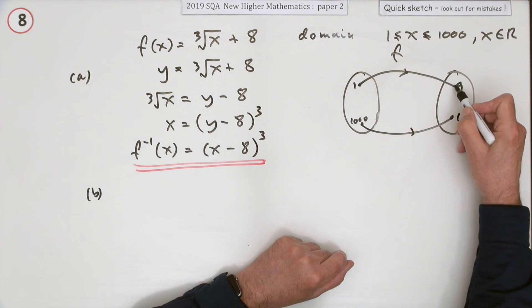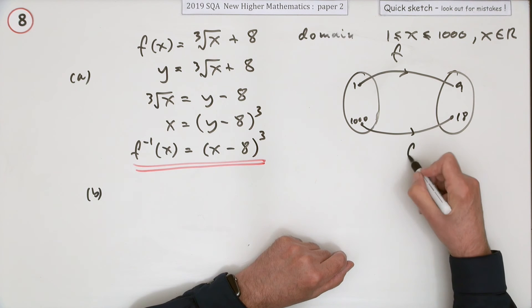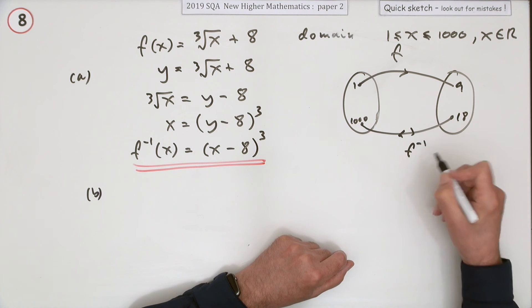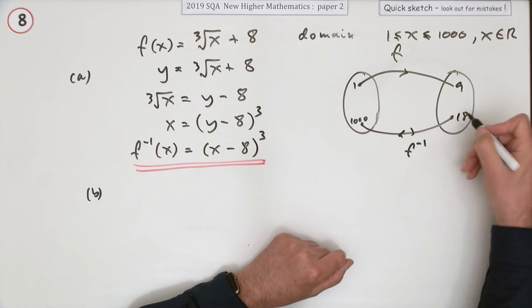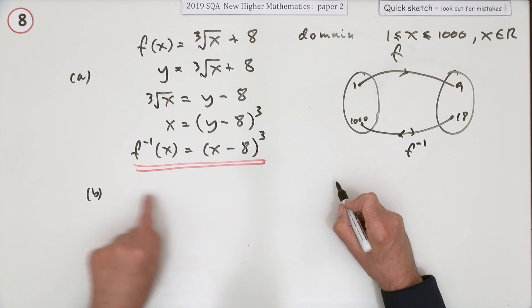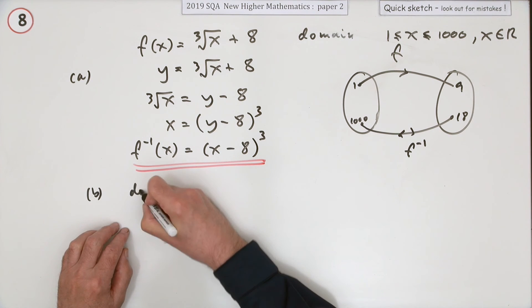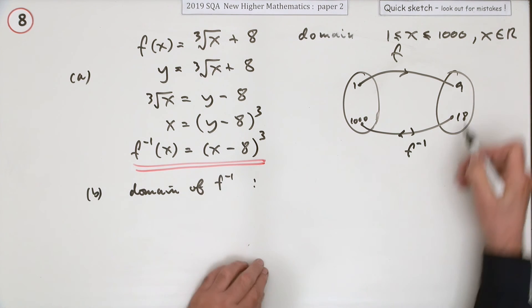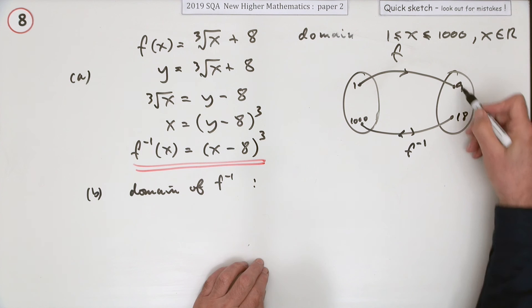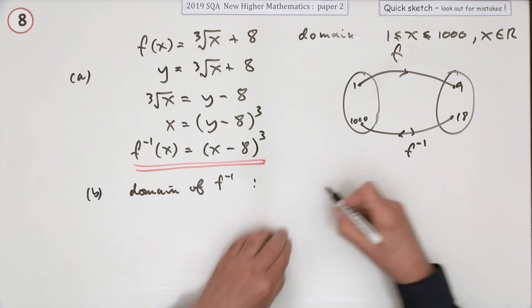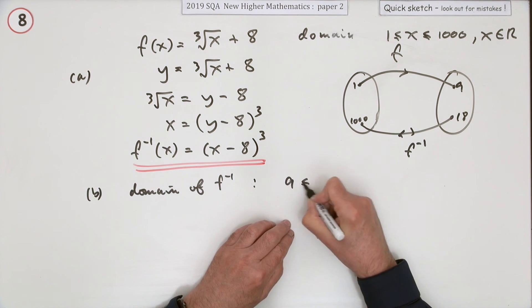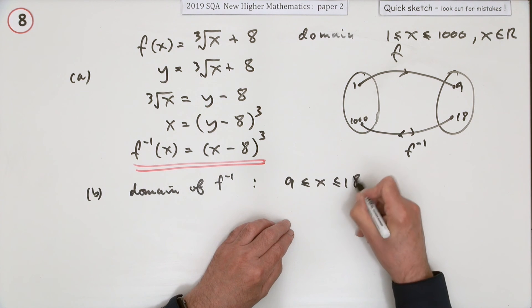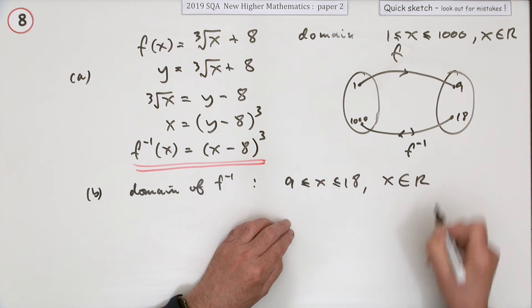Now f takes you to those numbers - all the numbers in between. So f dashed, the inverse function, takes you back again. When it says what's the domain of the inverse function, that will be all the numbers from 9 to 18. So 9 is less than x is less than 18, and all the real numbers in between.